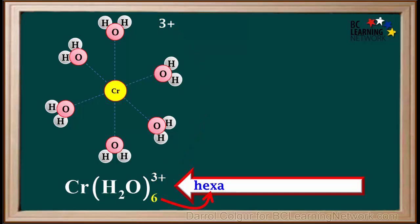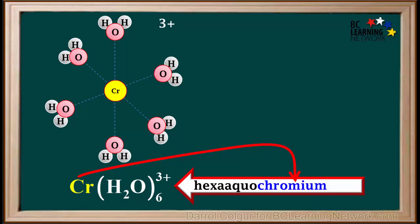The name of the ion is hexa for the six, aquo for the water, and chromium for the Cr. So the full name is the hexa aquochromium ion.